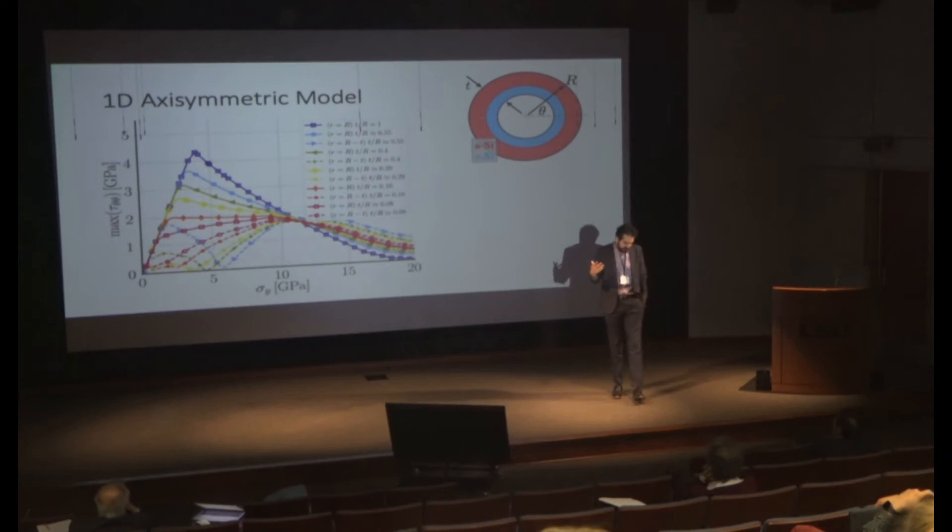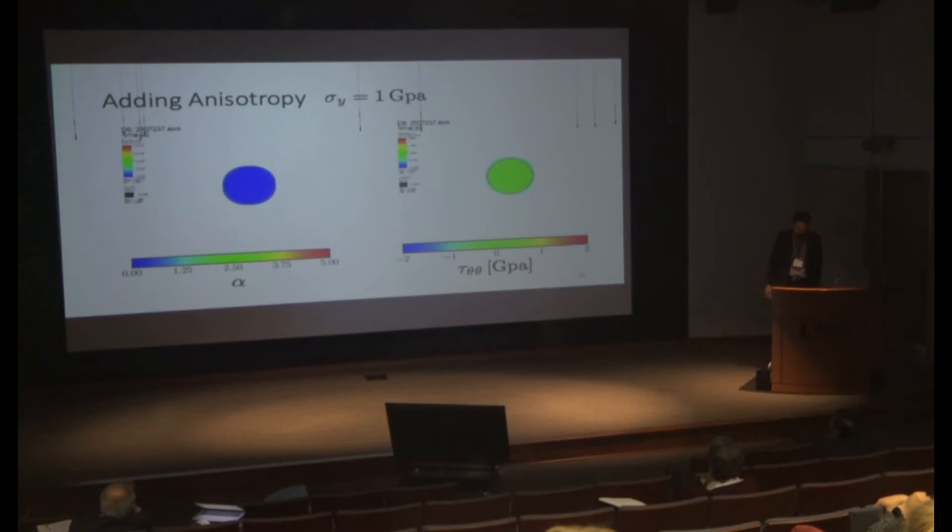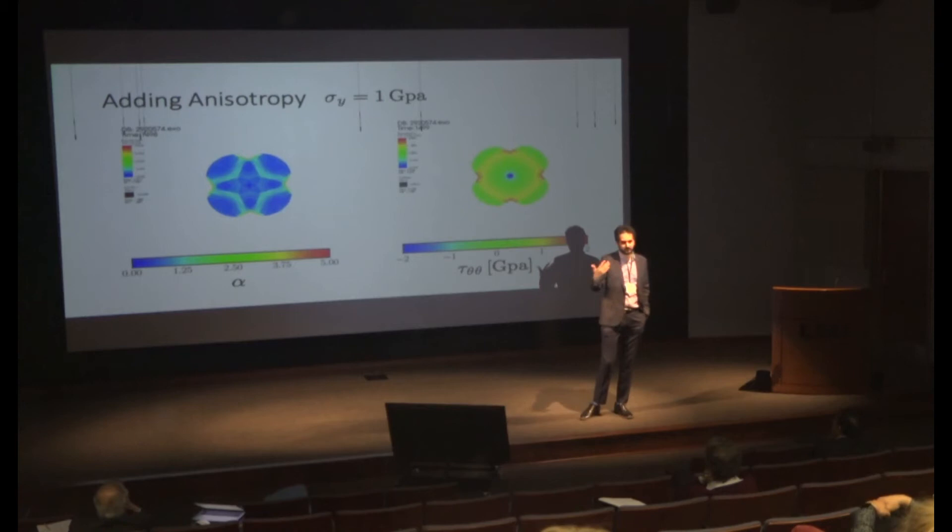So when the graph is going up it's yielding both in compression and tension, and when it's coming down you're yielding only in compression. Then you can do this for hollow cylinders. Axisymmetric is nice—I can add the anisotropy now.